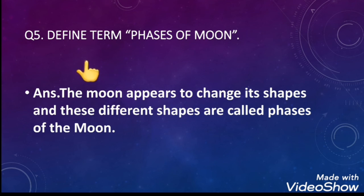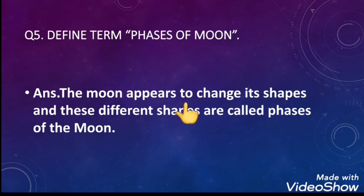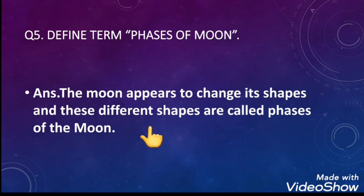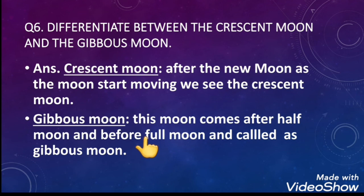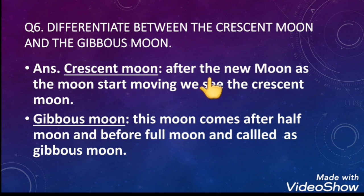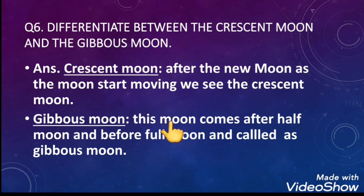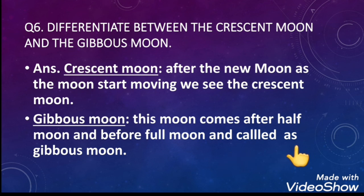Question number five: define the term phases of the moon. The moon appears to change its shape, and these different shapes are called the different phases of the moon. Question number six: differentiate between the crescent moon and the gibbous moon. After the new moon, as the moon starts moving, we see the crescent moon. The gibbous moon comes after the half moon and before the full moon.